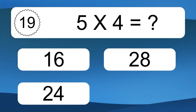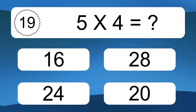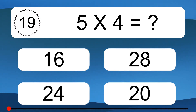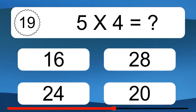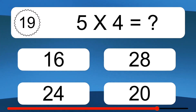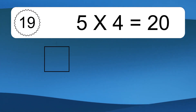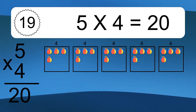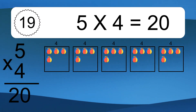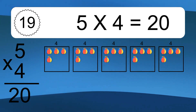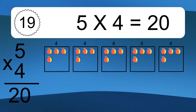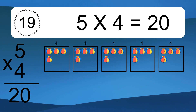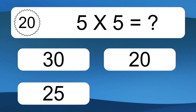5 times 4 equals what? 5 times 4 equals 20. We have 5 boxes and each box has 4 colorful balls inside. If you count all the balls in all the boxes together.